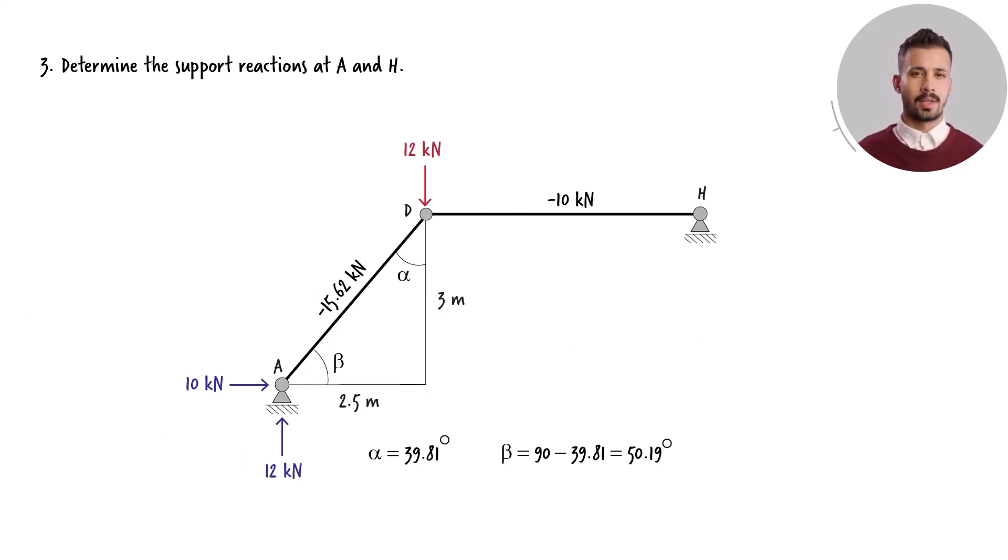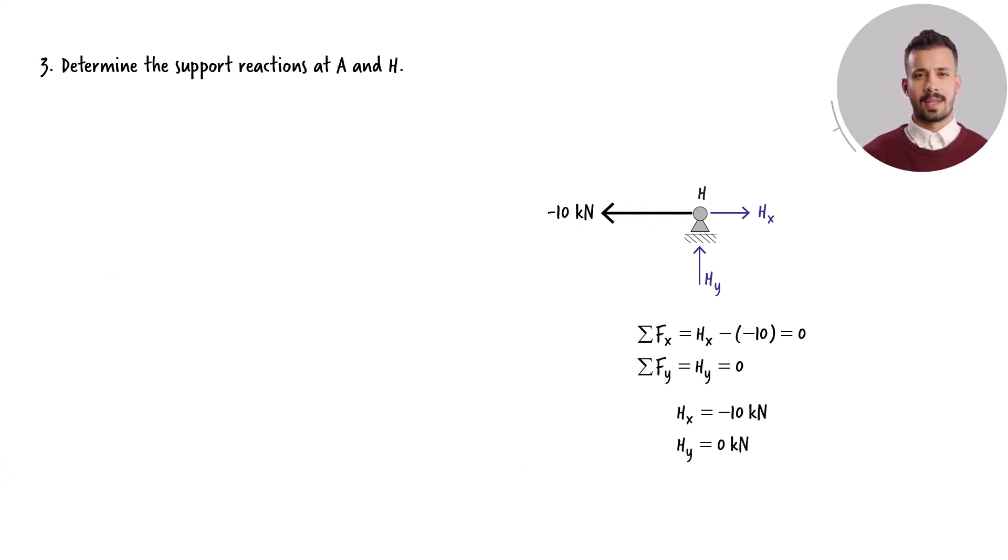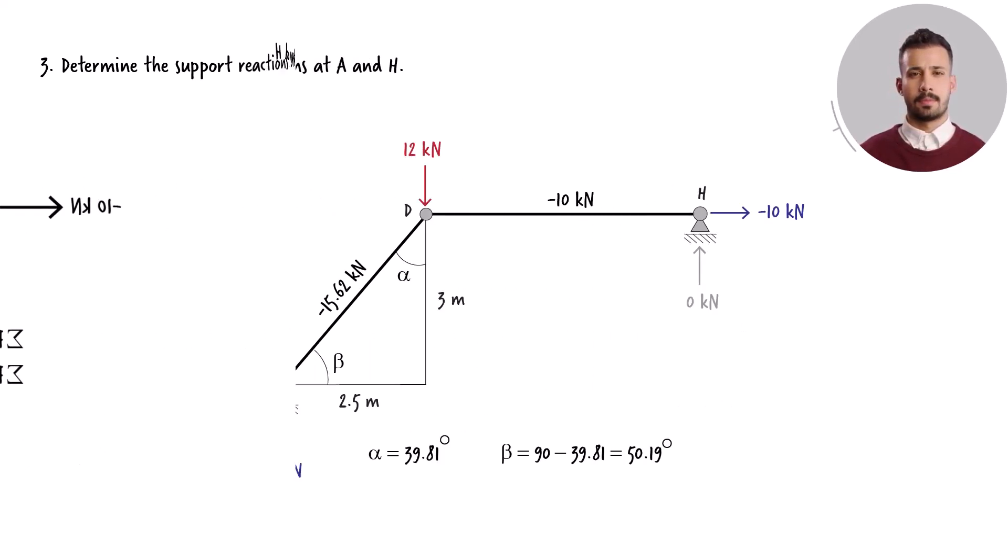Moving on, this is the free body diagram for joint H. The joint equilibrium equations reveal that the vertical reaction force is zero and the horizontal reaction force is negative 10 kilonewtons. So we have a total of three non-zero support reactions in the truss. There are two reaction forces at joint A and one reaction force at joint H.